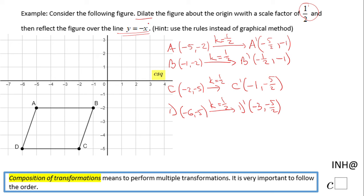Now we have to do the reflection over y equals negative x, which is this line. If you do not remember the rule, try to get one point reflected and get the rule.